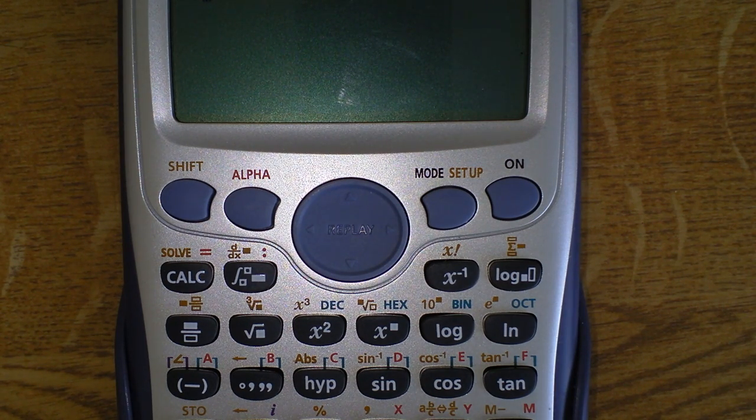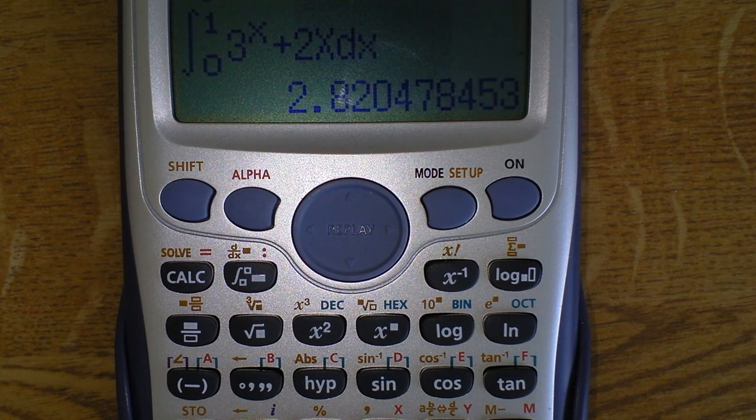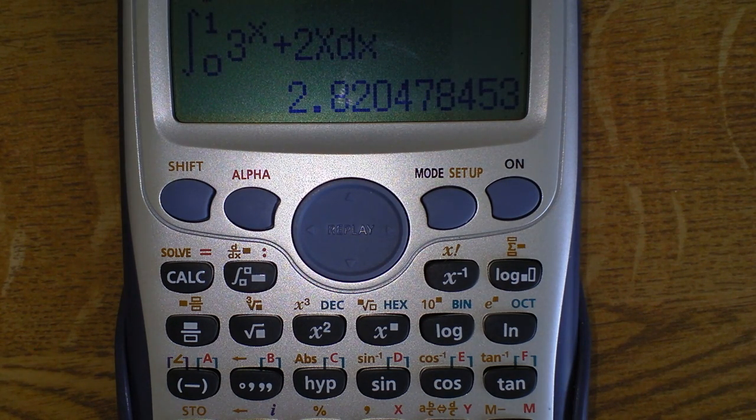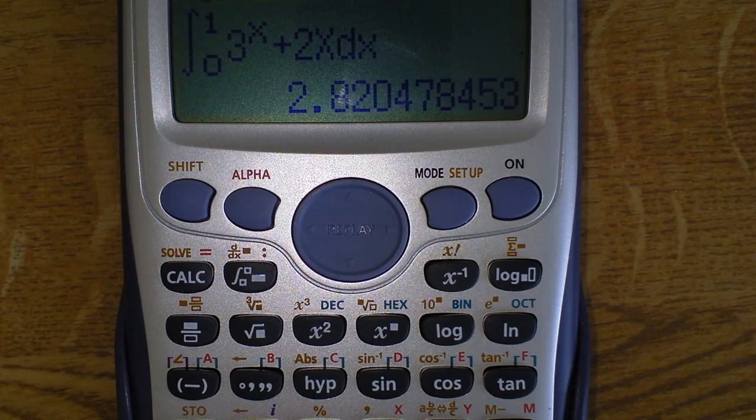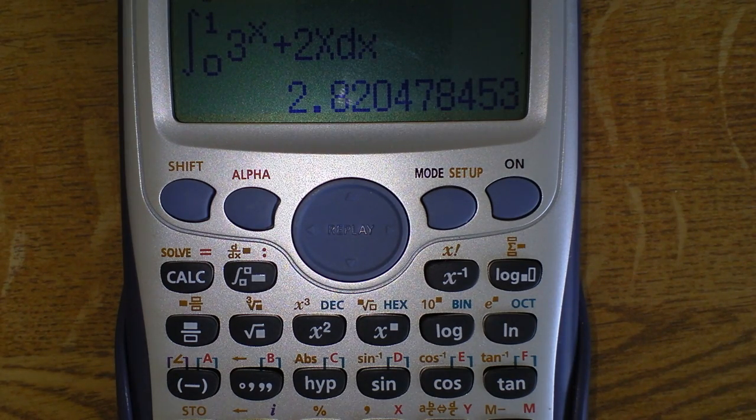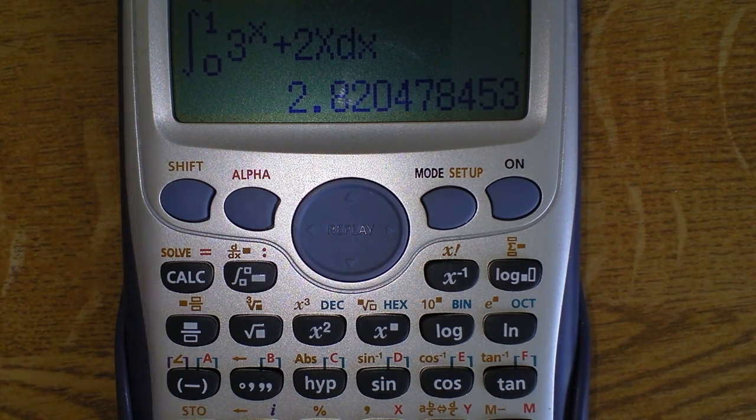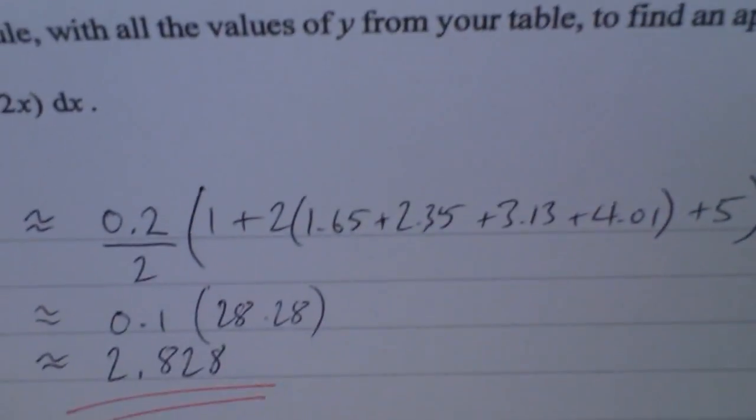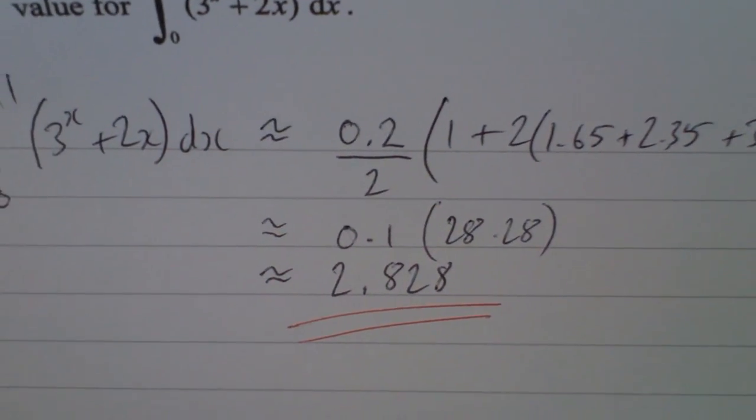And there we have 2.82, which to two decimal places is very close to the approximation that was worked out in this particular question here.